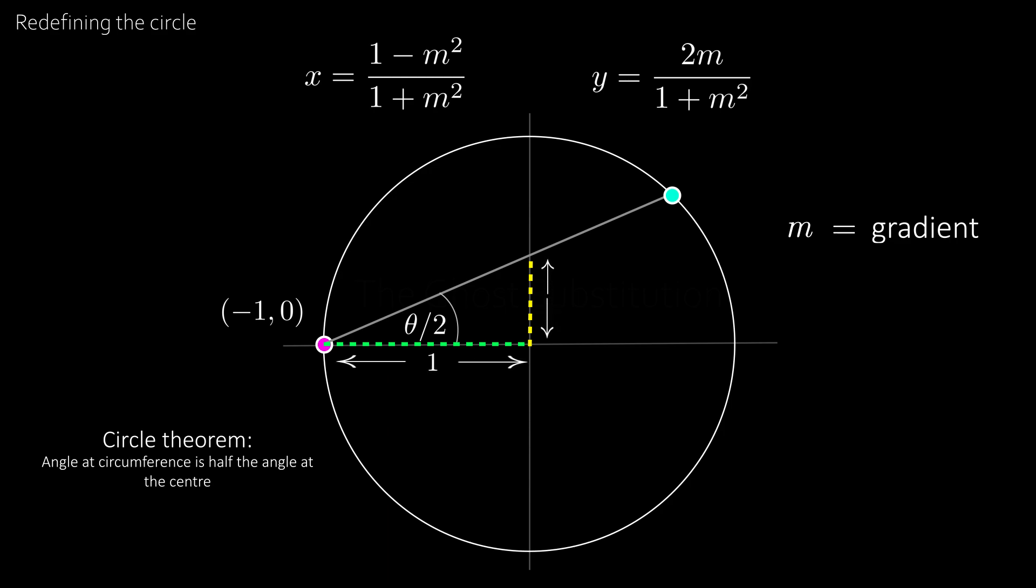and the change in y is actually tangent of x over 2. And we can see this because tangent is equal to opposite over adjacent. This means that the gradient m is tangent of theta over 2, and this is the ghost substitution.